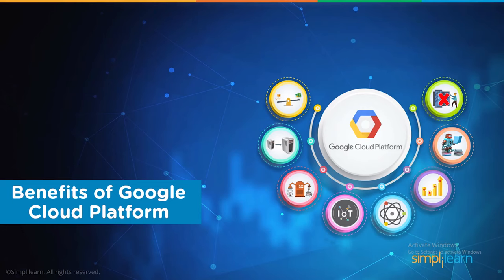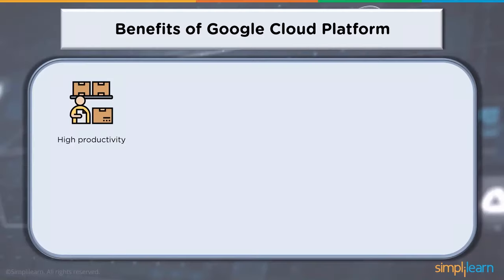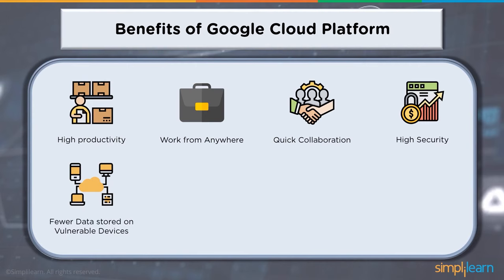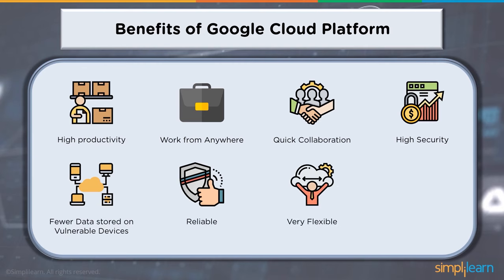The benefits of Google Cloud Platform include high productivity, working from anywhere, quick collaboration, high security, fewer data stored on vulnerable devices, reliable resources usable across organizations and geographical regions, very flexible scaling up and down as demand rises or declines, and cost-effective solutions for various use cases.